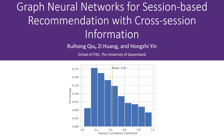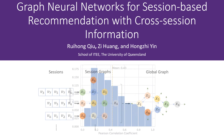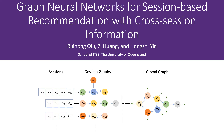As shown in the histogram of the Pearson correlation coefficient between different sessions, sessions that contain the same item often show a strong correlation. Furthermore, sessions in recent methods are always organized as a sequence, which is hard to mine the higher-order relationship between items.